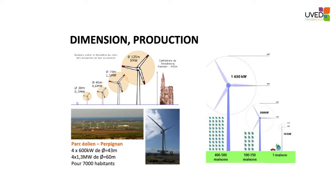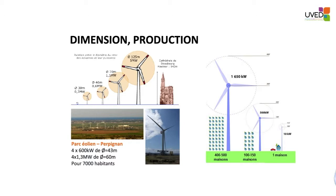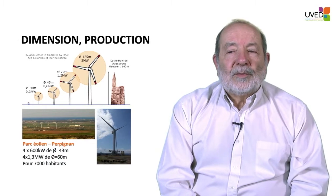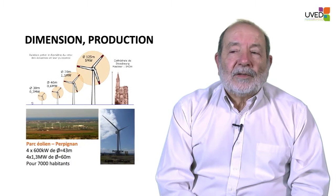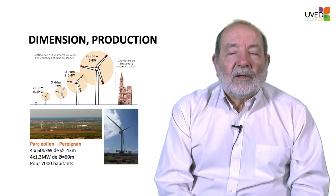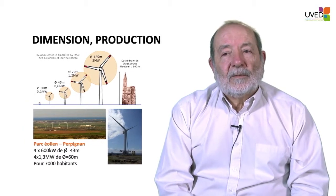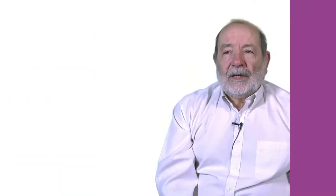How many houses can we supply with windmills? With a 10 kilowatt windmill, we have enough power for one house. With a 500 kilowatt windmill, we can supply 100 to 150 houses. And with 1.6 megawatts, we can supply between 400 and 500 houses.